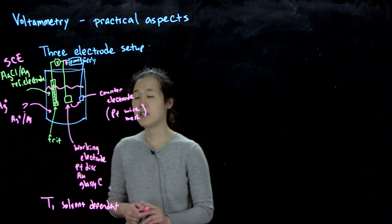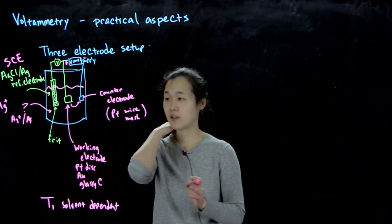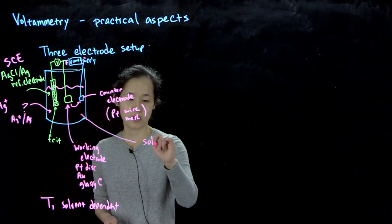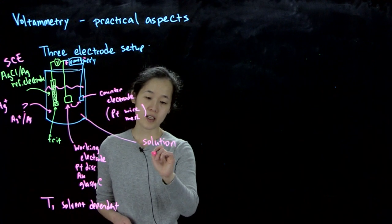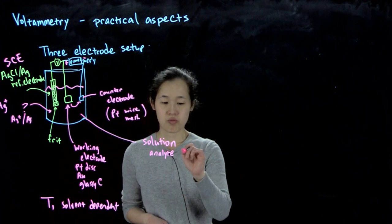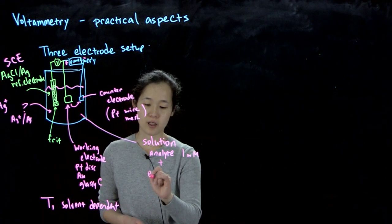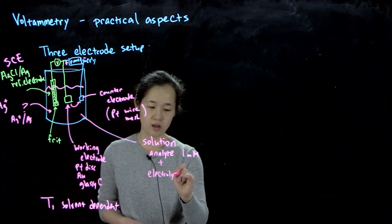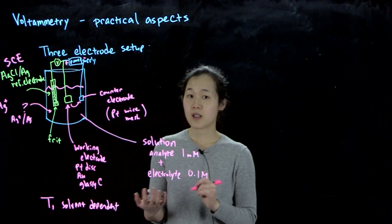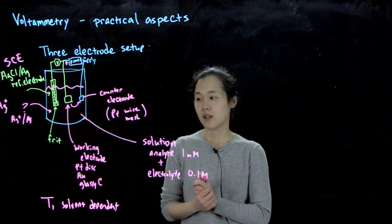One last thing to keep in mind is we need things to conduct. If you're doing silver nitrate in something non-conductive in an organic solvent, this solution, this analyte solution, has to be your analyte, what you're measuring. This could be one millimolar, less than that, 0.1 millimolar. But you also need the electrolyte. This will typically be higher concentration, like 0.1 molar.